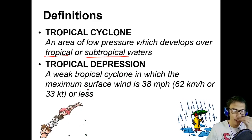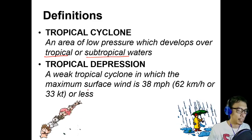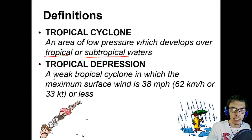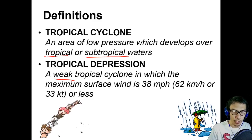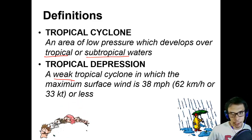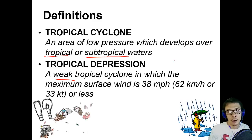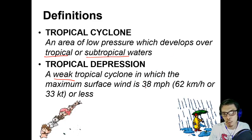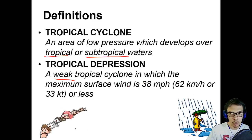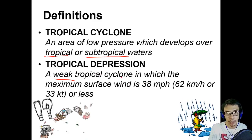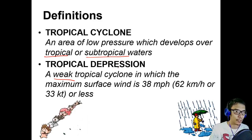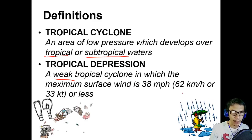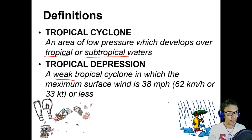Before it becomes a cyclone, it starts first with a tropical depression — a weak version of a typhoon with a wind speed of 38 miles per hour or 62 kilometers per hour. Any less than this is called a standard storm. Higher than this is called a tropical storm, and higher than 100 km/h you can have a tropical cyclone or even a super typhoon.